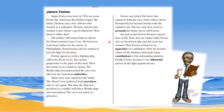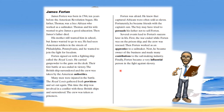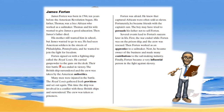Several events led to Fortin's success later in life. First, the war ended while Fortin was on the prison ship and the crew was rescued. Then Fortin worked as an apprentice to a sailmaker. Next, he became owner of the business and made many contributions to the sailmaking industry. Finally, Fortin became a very influential person in the fight against slavery. He started as the son of a free African, went to sea to make a name for himself, and crafted his own destiny — eventually contributing greatly to the sailmaking industry.